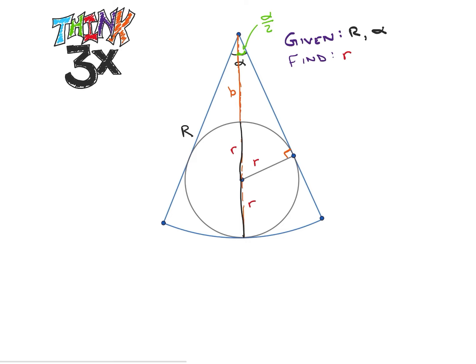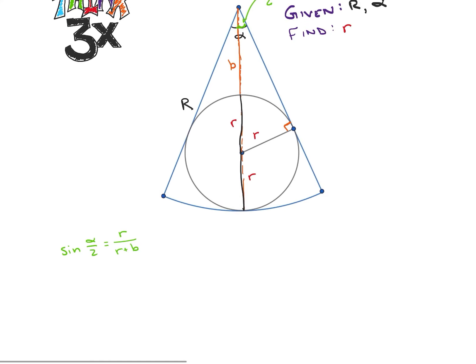So what I'd like to do first is let's look at this angle alpha over 2 and let's notice that sine of alpha over 2 is equal to r so opposite divided by r plus b. Okay and now what I can do here is I can solve so we get a little bit more information.